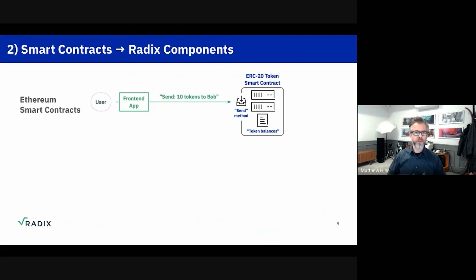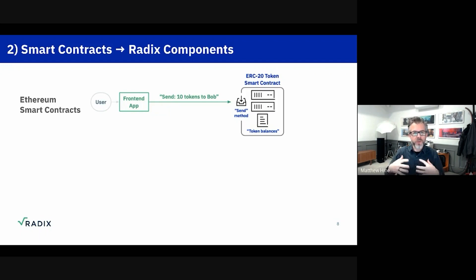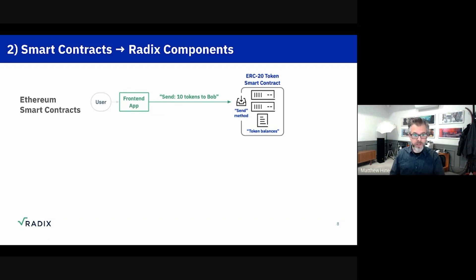This is a little bit counterintuitive. If you bring up your Ethereum wallet and you've got a dozen different ERC-20 tokens in your wallet, it isn't as if those tokens are actually stored in your account. What's actually happening is your wallet is going out, talking to a dozen different ERC-20 contracts and asking each one of those contracts 'what's my balance here?' and presenting you a view of all those balances. In some ways, it's kind of like interacting with banks, which is a little bit ironic.